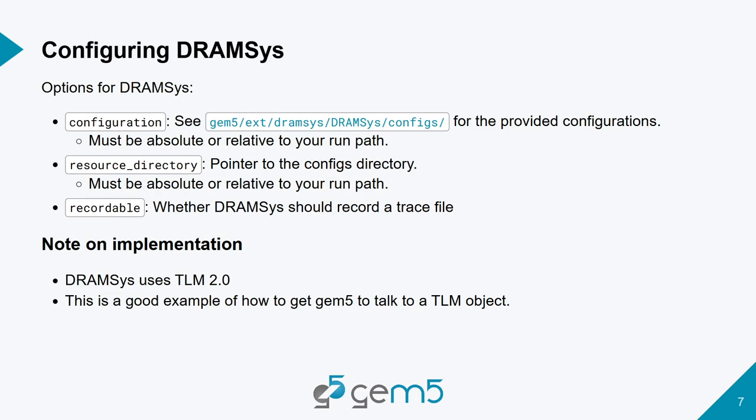There are a few options for DRAMSys: the configuration, the resource directory (where all the configurations live), and 'recordable' — DRAMSys can output a trace. A note on the implementation: DRAMSys actually uses TLM 2.0 in its implementation, and to do the integration between GEM5 and DRAMSys, we use GEM5's TLM 2.0 implementation. GEM5 also has a bridge between ports and TLM, and that's what's used here.